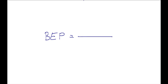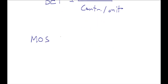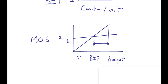On the scratch paper provided, recall the formulas we're looking for. Break-even point will be fixed costs divided by contribution per unit. Contribution per unit will be selling price minus variable cost per unit. We're also looking for the margin of safety. I like to draw a quick break-even chart to visualize what's happening. Margin of safety would be the difference between the break-even point and the budgeted activity level — in units, revenue terms, or as the question requires, in percentage terms: the percentage drop before we break even.